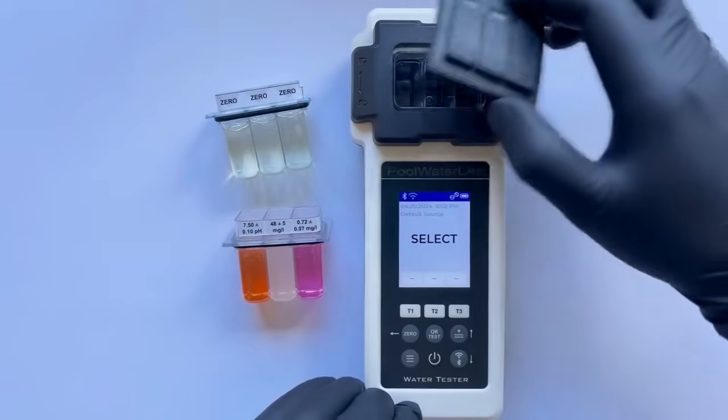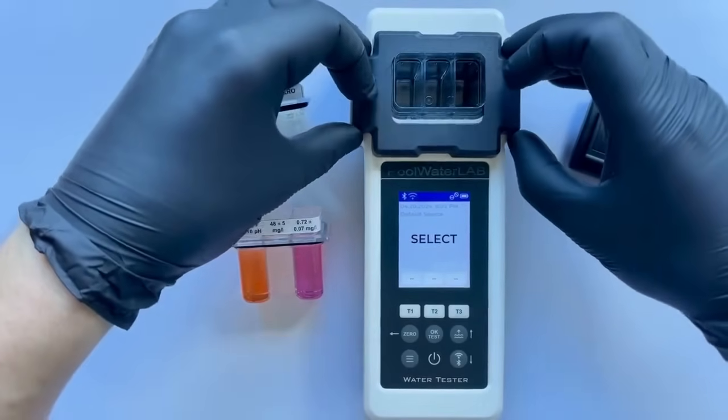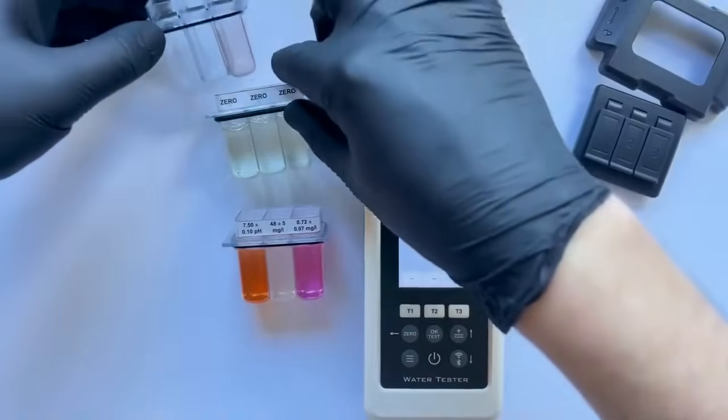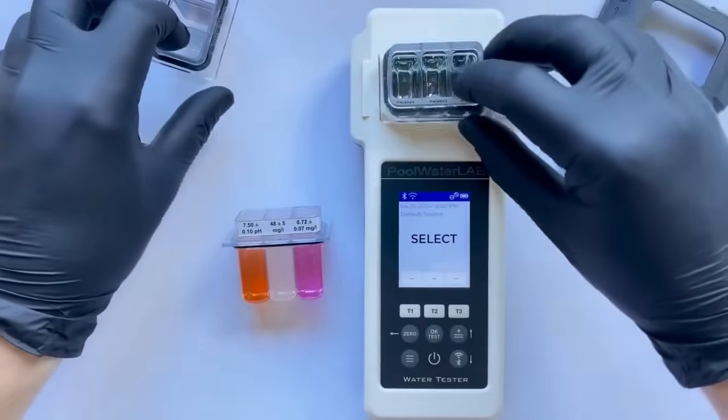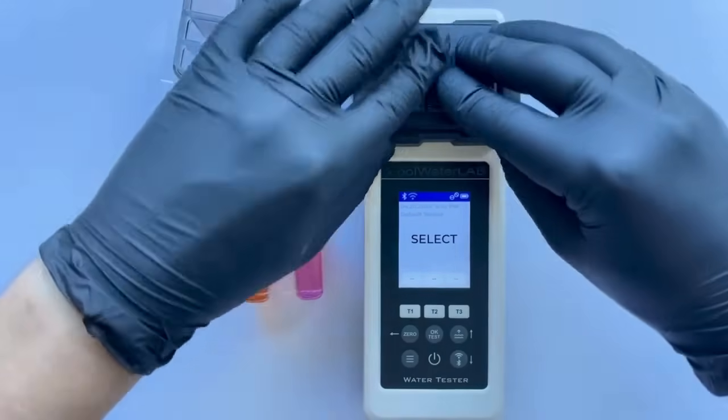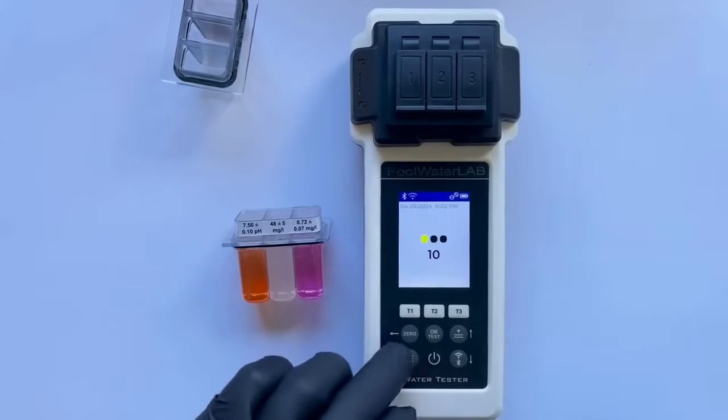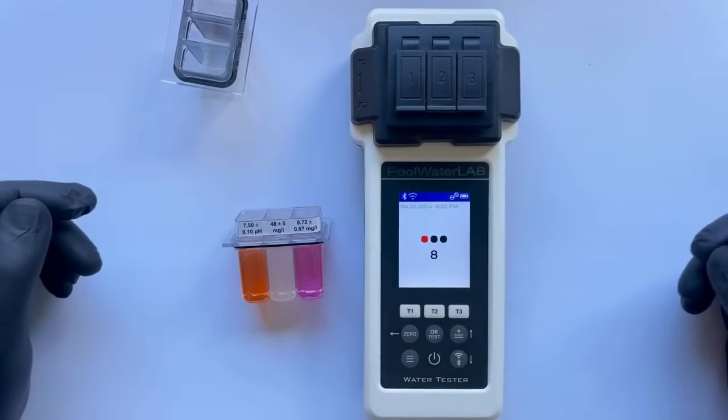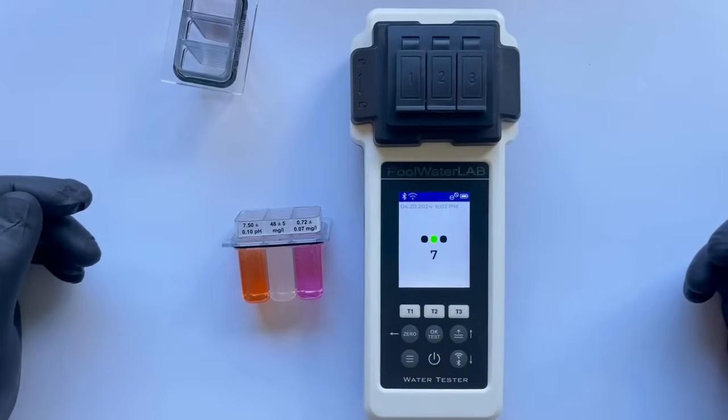Let's start by placing the zero sample with pure water and conducting the test. This step is essential as it ensures the tester is correctly calibrated before we proceed with further testing. Press the zero button to start the test and wait until the countdown ends.